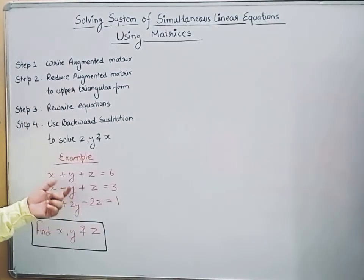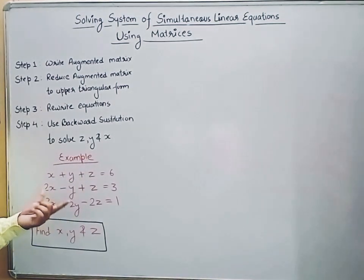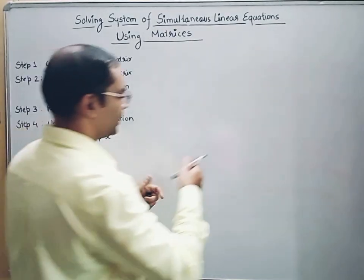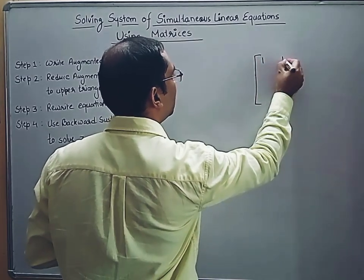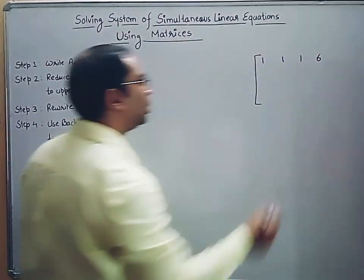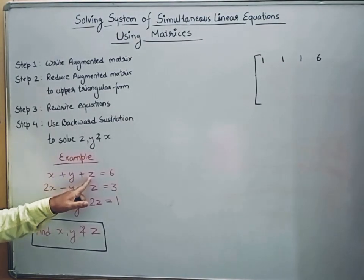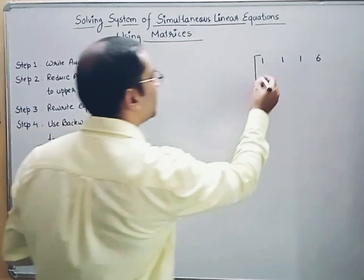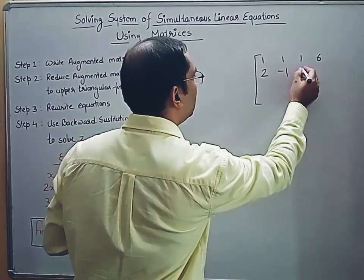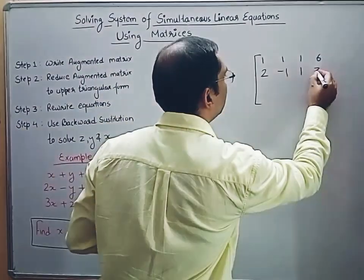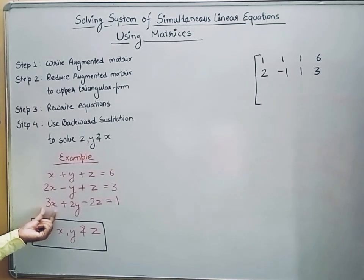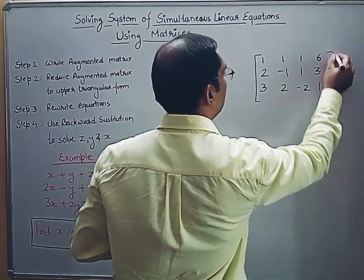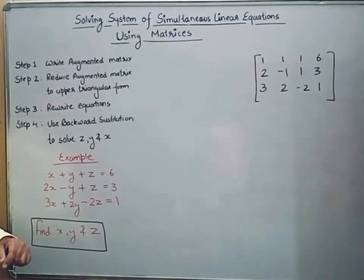Let us apply these steps to our example. Step 1: writing the augmented matrix. From the first equation (x plus y plus z equals 6), the first row is 1, 1, 1, 6. From the second equation (2x minus y plus z equals 3), the second row is 2, -1, 1, 3. From the third equation (3x plus 2y minus 2z equals 1), the third row is 3, 2, -2, 1. So we have written the augmented matrix.